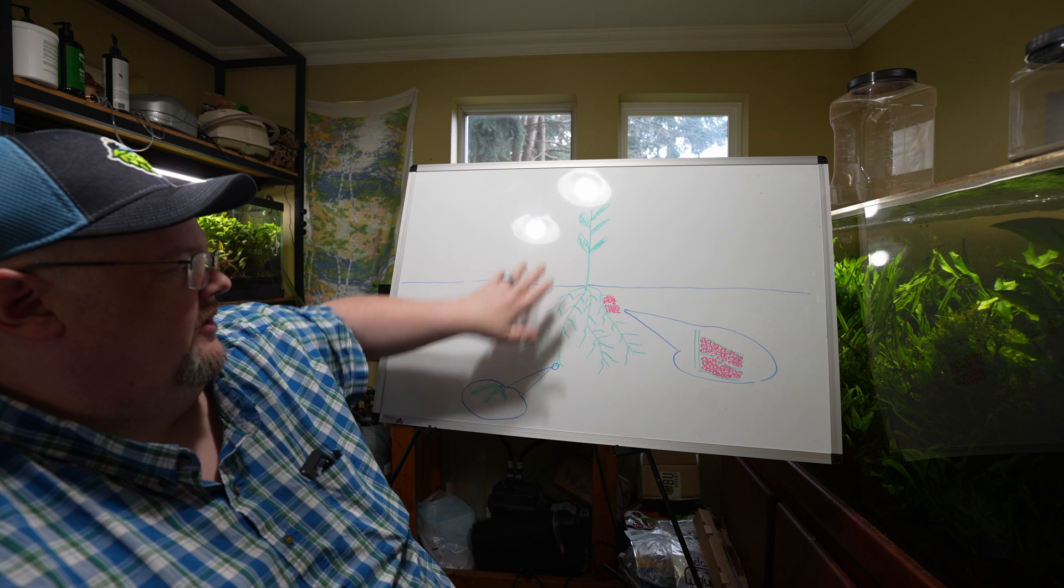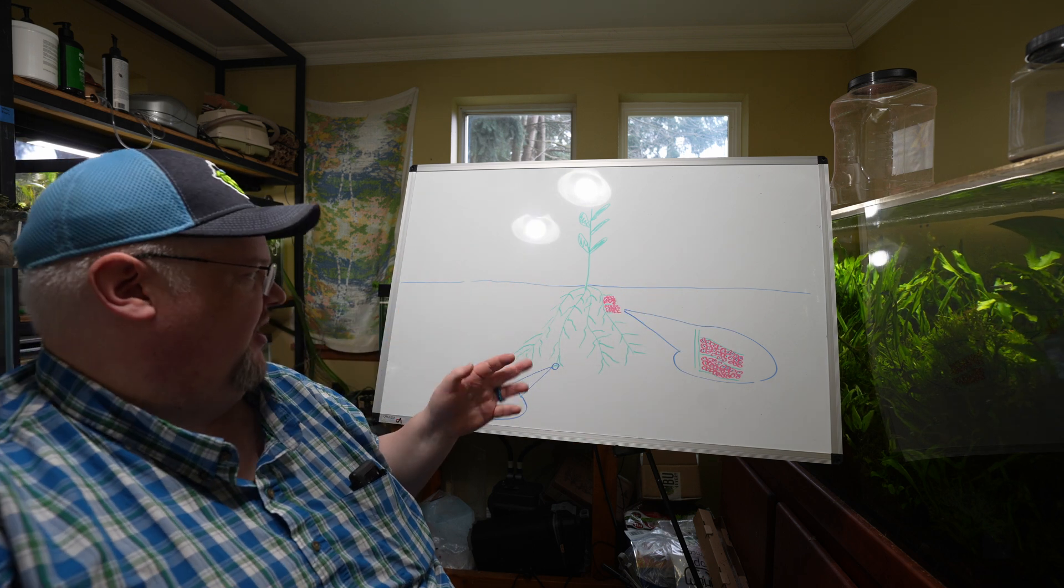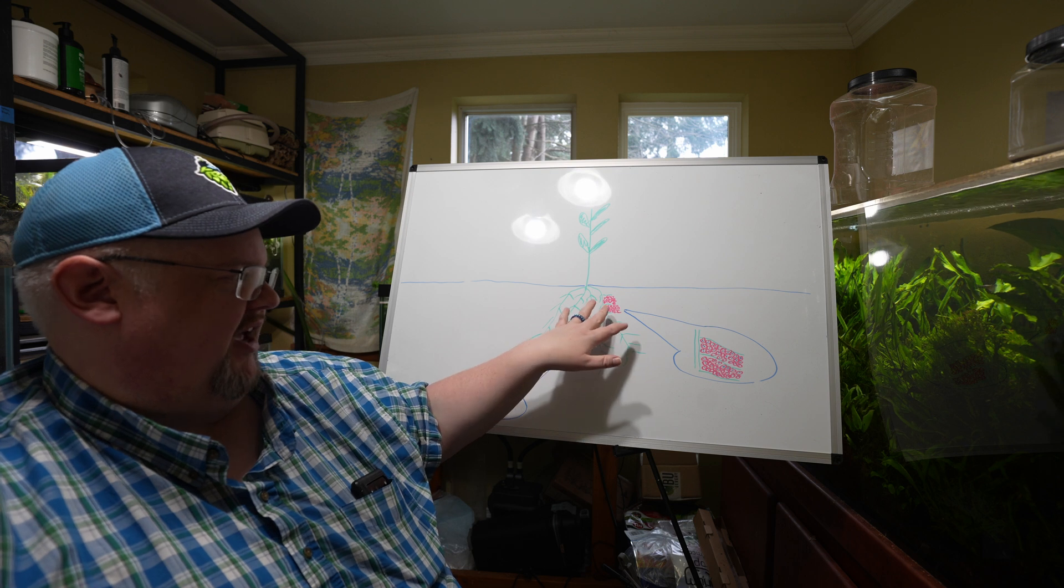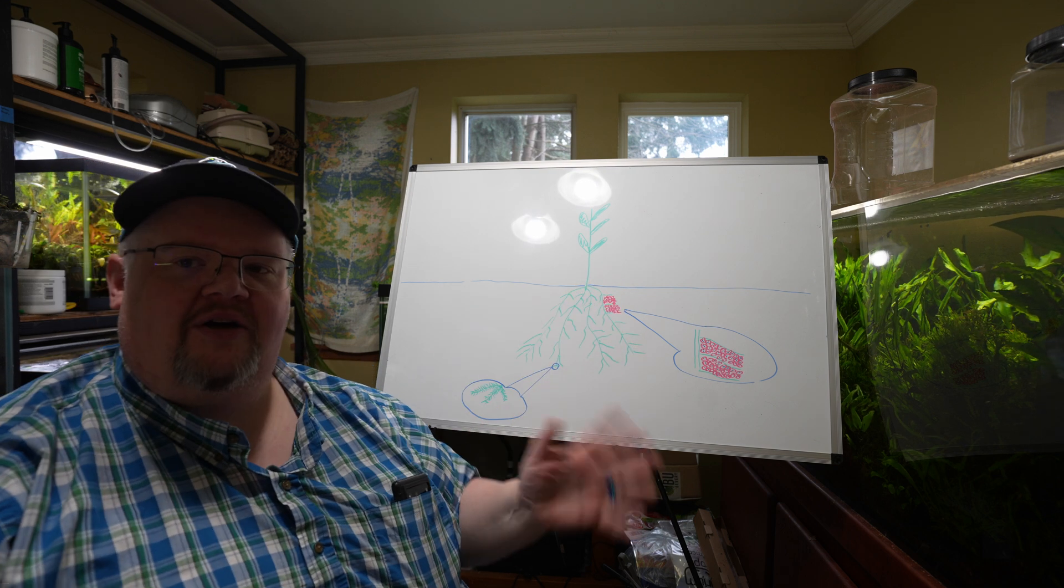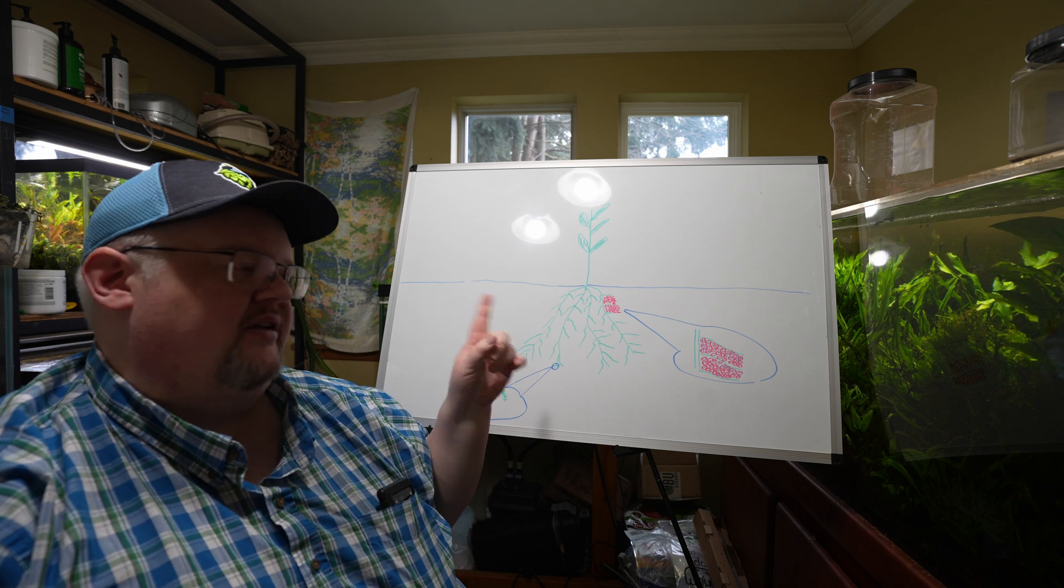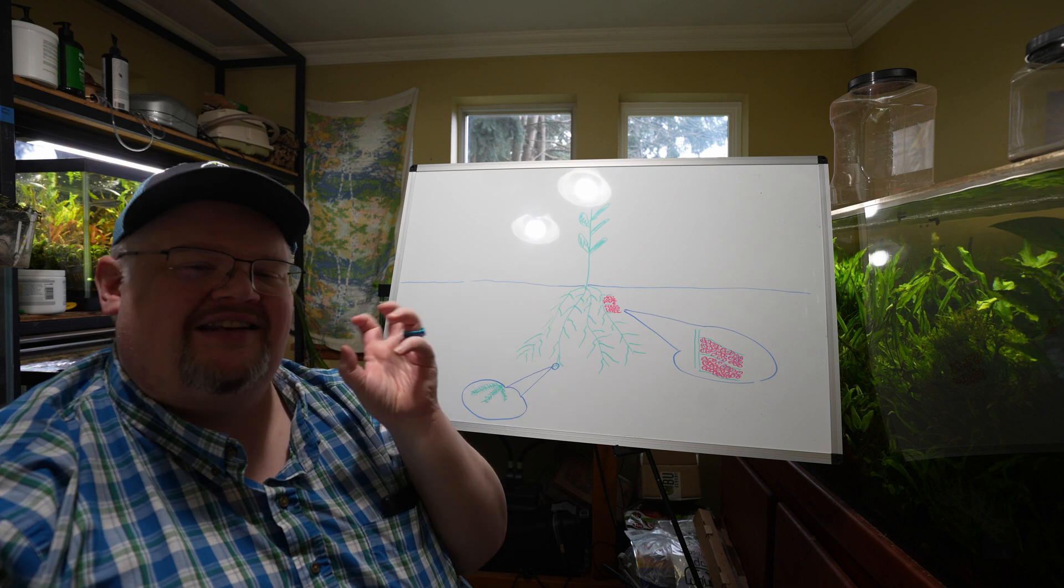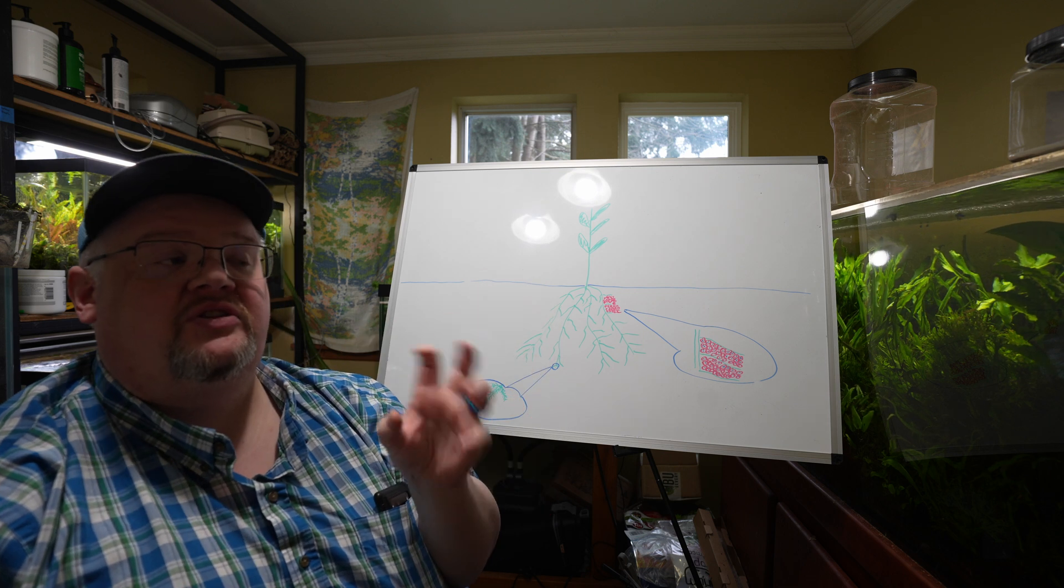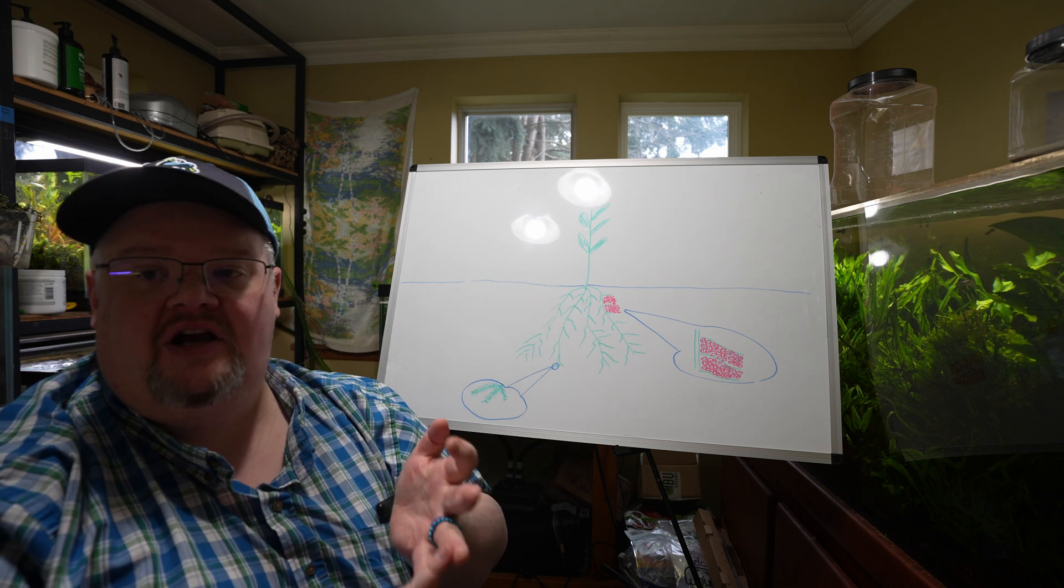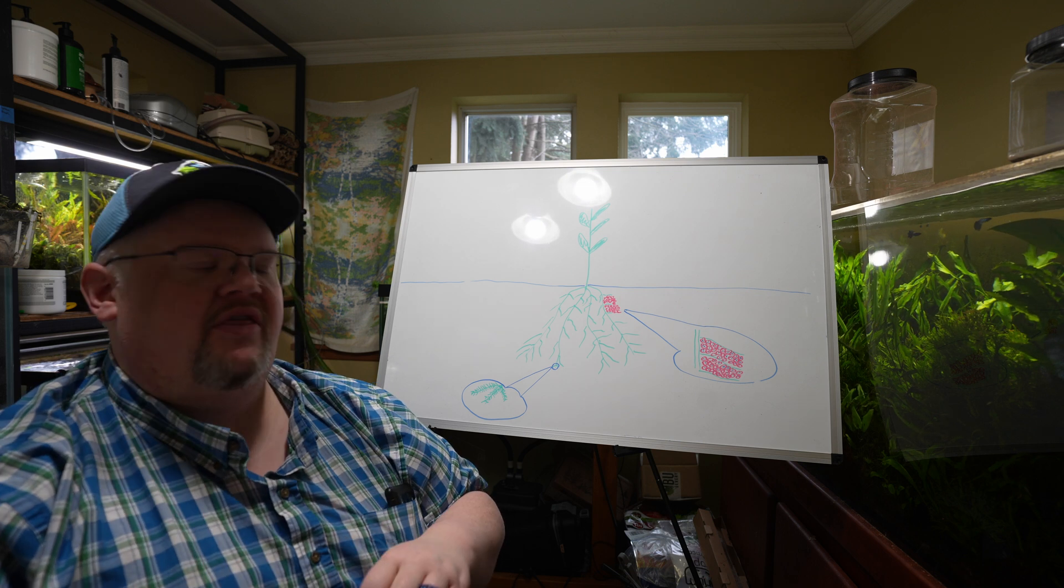We have our plant, we have our soil line, I only have so many colors, what do you want from me? Then we have our root system, and then we have our aqua soil, dirt, gravel, whatever we're using. But this lesson applies best to soils that can hold nutrients, so things like dirt, aqua soil, whether it's clay or ash-based, those are most prevalent.